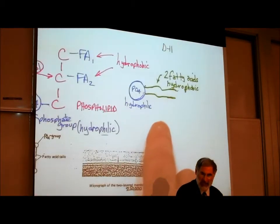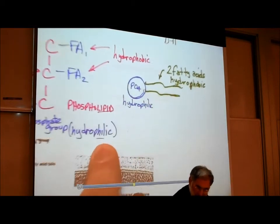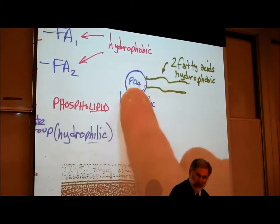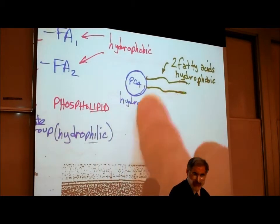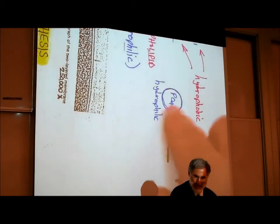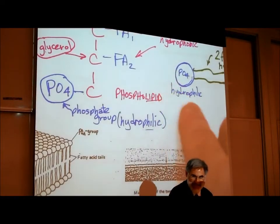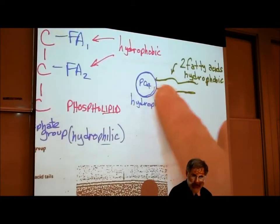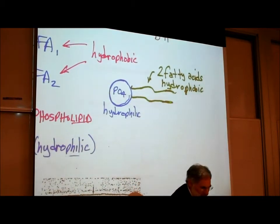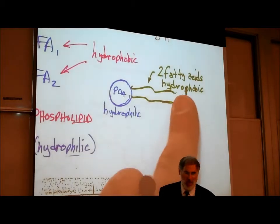A phospholipid is commonly depicted symbolically like this. To me, it looks kind of like a balloon with two strings. The balloon part is where the phosphate is, and it's hydrophilic. The two strings represent the two fatty acids — the two long chains of carbon atoms with hydrogen atoms attached — that hate water, that are hydrophobic.